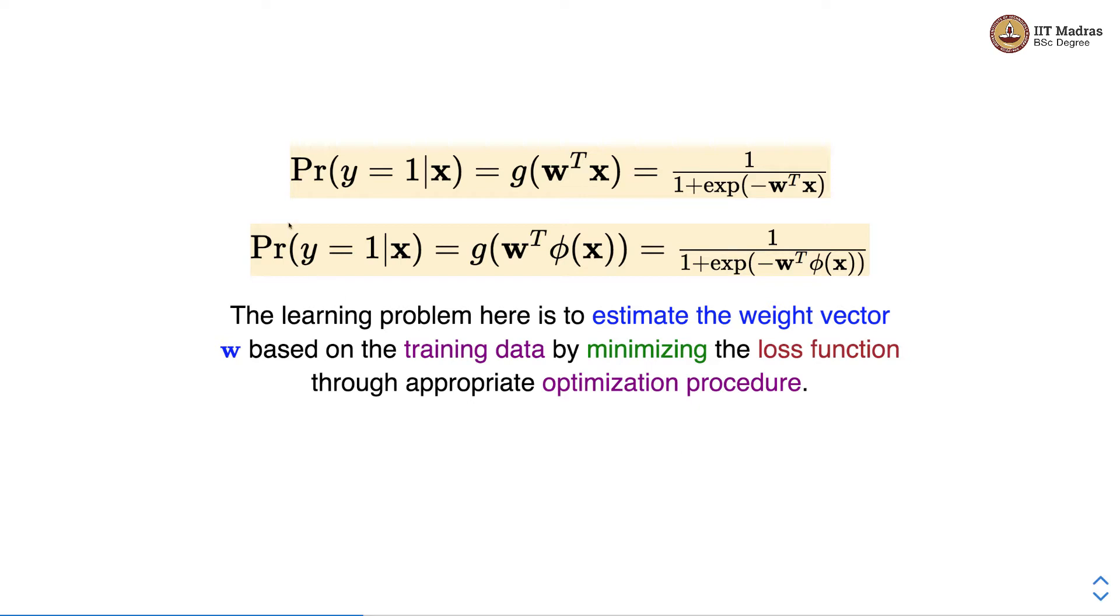As we knew from the previous video, there are two types of logistic regression setups. One with feature vectors and second with transformation applied to the feature vector before doing linear combination and applying sigmoid on it. The learning problem is to estimate the weight vector w based on training data by minimizing the loss function through appropriate optimization procedure. Now we will focus on deriving the loss function for logistic regression.